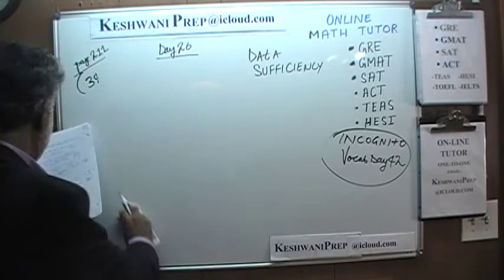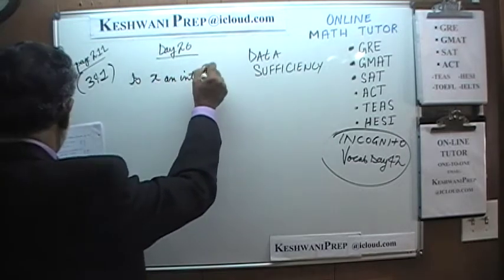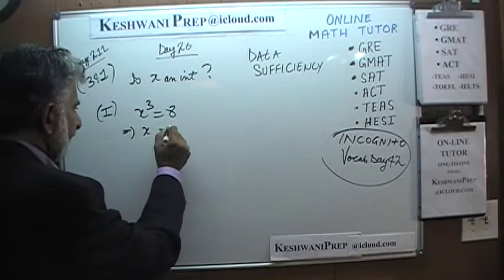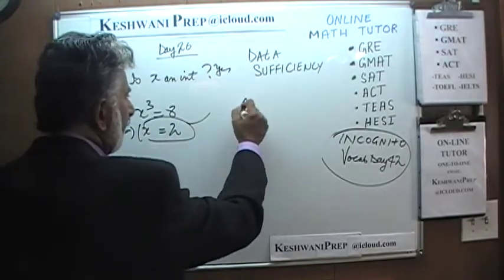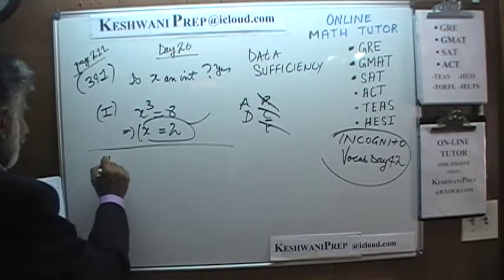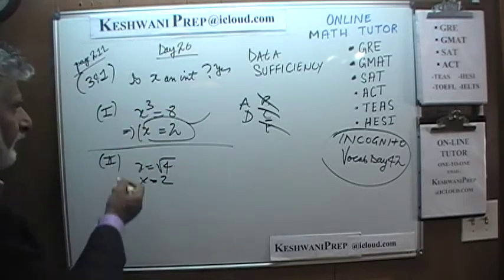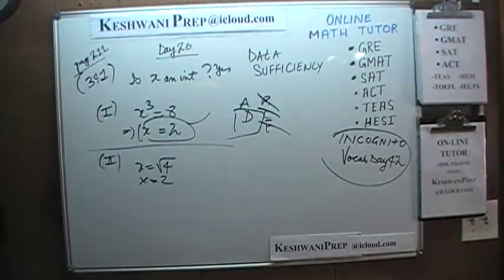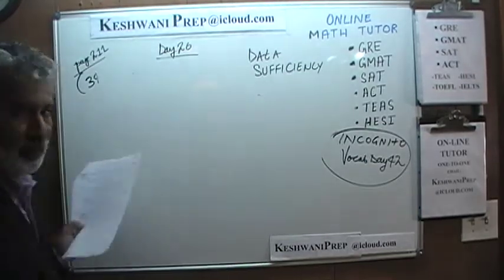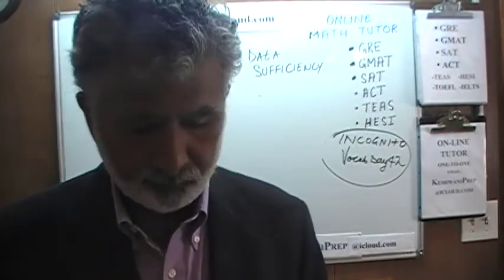Number 341 says: is x an integer? Statement 1 tells us that x cubed equals 8. Well, if x³ = 8, that implies x = 2. The answer is yes, it is an integer. We can answer the question using the first statement alone, so the answer cannot be B, C, or E. Statement 2 tells us x equals the square root of 4 — again, that is 2, obviously an integer. The answer is D. That was a gift — don't complain about the easy ones, because those are gifts. If somebody wants to give you a gift, take it.